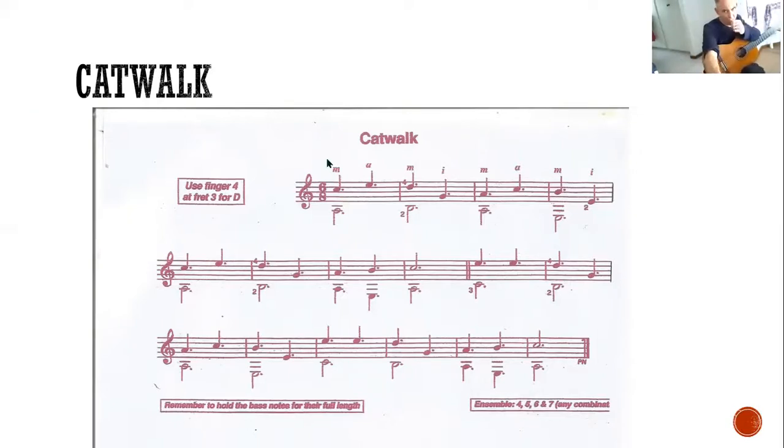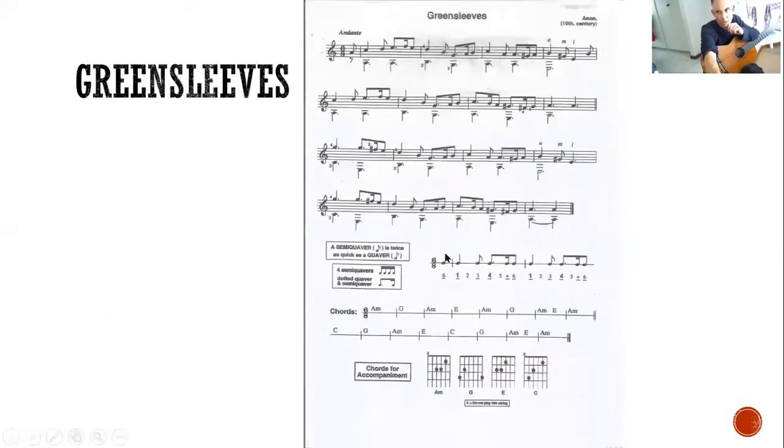Six-eight is sometimes known also as two-four. Here's Greensleeves, and in Greensleeves you can see a strong two in a bar.